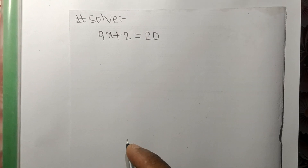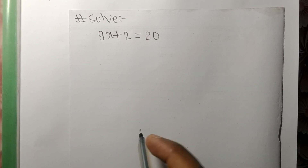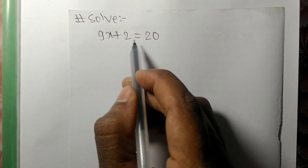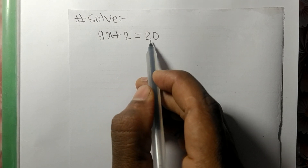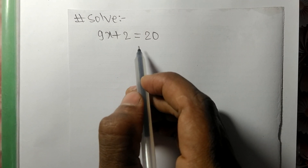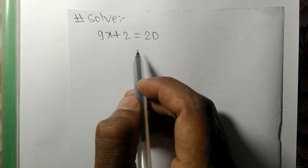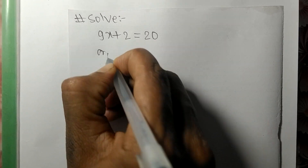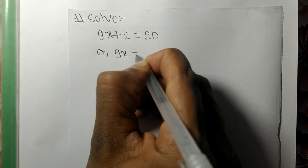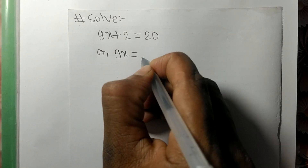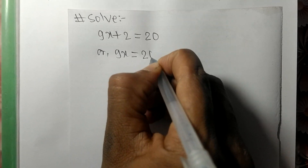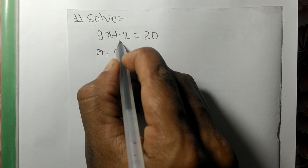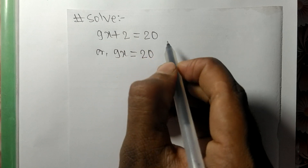Today we solve 9x + 2 = 20 to find the value of x. To solve it, we write 9x equal to 20. Since it contains plus 2, while moving it to the opposite side it becomes minus 2.